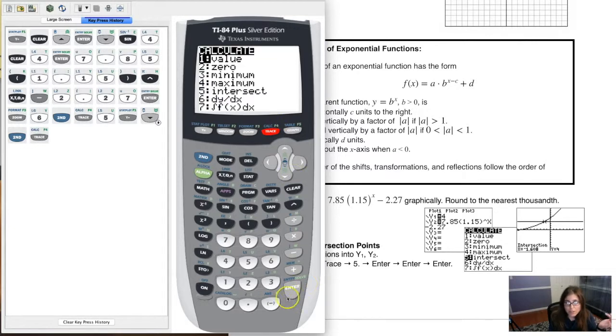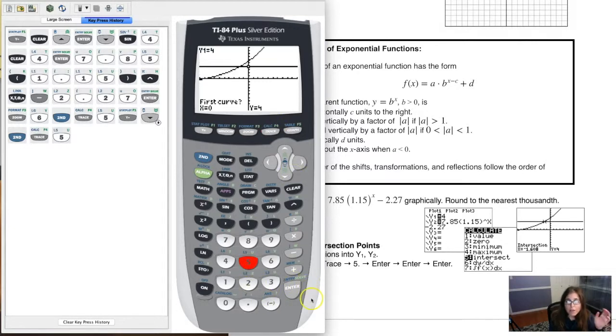So let's go back. I'm going to hit second, trace 5. Alright, now first curve. Do I want my first curve to be y1, which is the equation 4? Yes, I do. So I'll hit enter. And it'll prompt you. Do you want y2 to be the second equation? Which I do. So your calculator recognizes that you only have two functions in there. So those are probably the two you want to calculate the intersection of. Alright, now you can guess if you want, or you can just hit enter. So if I hit enter, there it is.